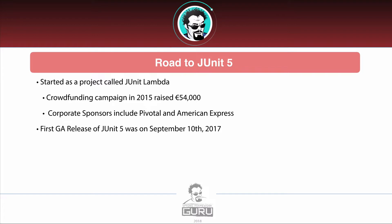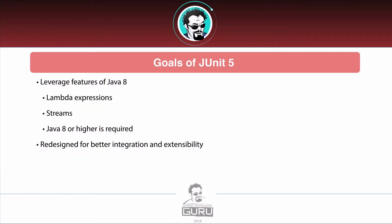The first general available release of JUnit 5 was on September 10th, 2017 — roughly a year before the time of this recording in October 2018. Adoption has been a little slow since JUnit 4 is so established, but people are starting to use JUnit 5 more and more. One of the goals of JUnit 5 is to leverage the features of Java 8 — lambda expressions, streams — and they are requiring Java 8 or higher, just as Spring 5 did.